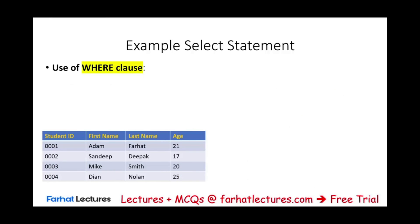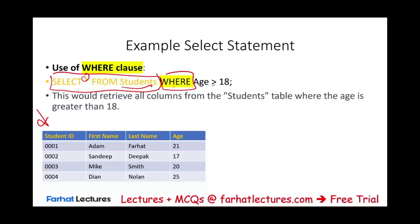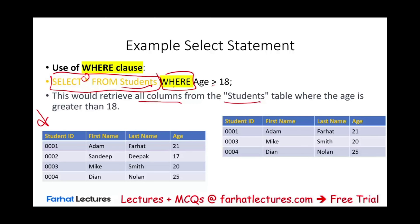Another important example is the WHERE clause. If we write SELECT * FROM student WHERE age > 18, the star selects all columns from the student table, but the WHERE clause limits which rows are returned — specifically, only rows where the age is greater than 18. This would retrieve Adam, Mike, and Diane, but not Sandeep, because Sandeep is 17 and would not be selected. This is the output we would have.